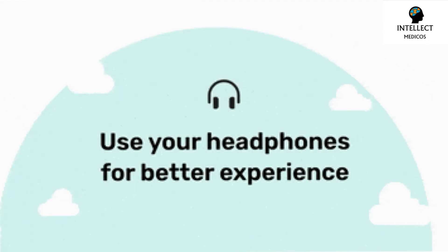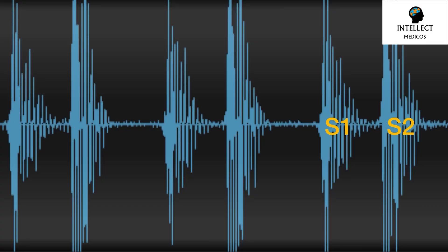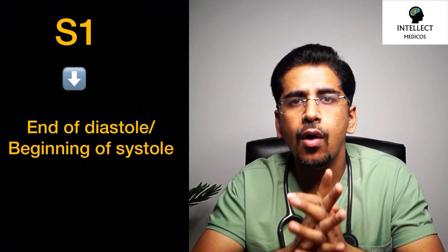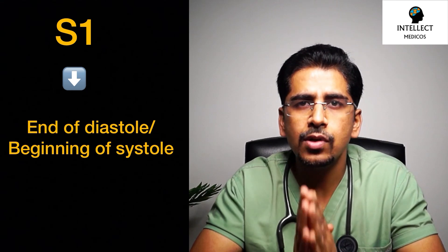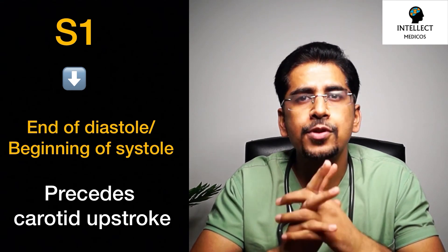Coming to the first heart sound — the 'lub' of lub-dub — commonly called S1. This first heart sound is produced by the closure of the tricuspid and mitral valves. Closure of the tricuspid is called T1, whereas closure of the mitral valve is called M1. M1 is usually louder than T1 because of the higher pressure on the left side of the heart. The first heart sound corresponds to the end of diastole or beginning of ventricular systole, and precedes the upstroke of carotid pulsation.